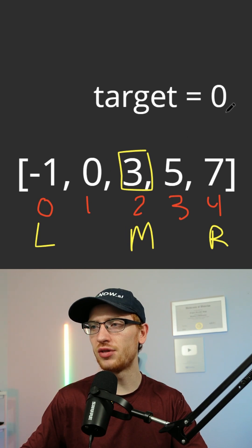Then we would check if our middle value is equal to the target. No it's not, we haven't found it, but we know that our middle value is too big. It is bigger than the target.